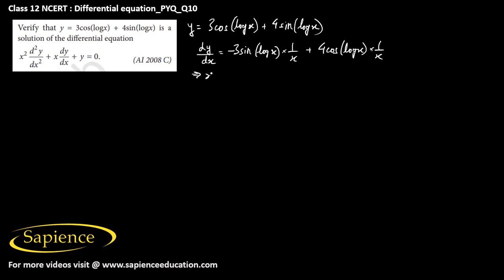Therefore, you can say that x dy by dx equals minus 3 sine of log x plus 4 cos of log x.